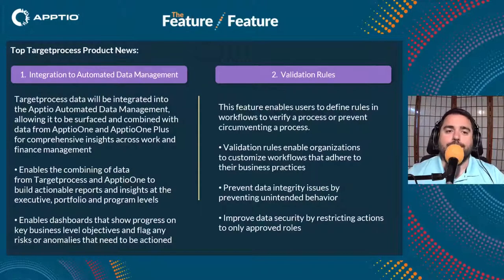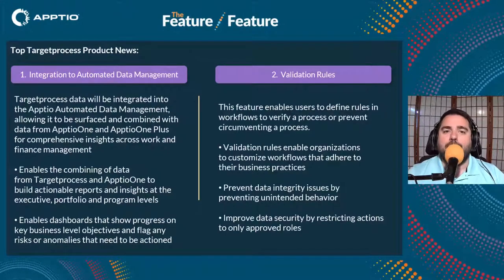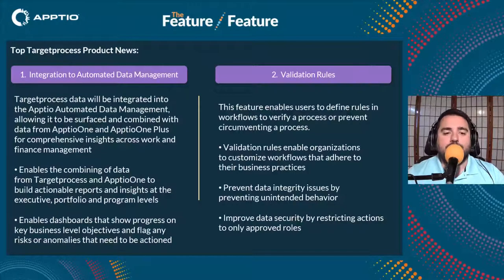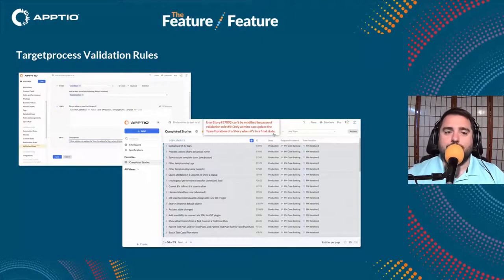The next update is Validation Rules. Validation rules enable users to define parameters, rules, and workflows to verify processes or prevent circumventing a process — setting up parameters around different actions that users can take, either preventing them from taking actions because they don't have the right role, or setting up prerequisites in order to move forward with different actions. This improves data integrity and security. It's easy to set up validation rules; you can make them complex or simple depending on your use cases and what you need for your users.